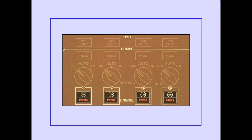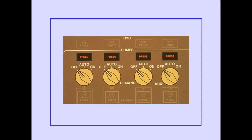The engine pump switches control the primary source of pressure for the hydraulic systems. Each engine pump has a low pressure light. Demand pumps provide additional pressure when system demand is high, or when engine pump output pressure is low. Each demand pump has a low pressure light.